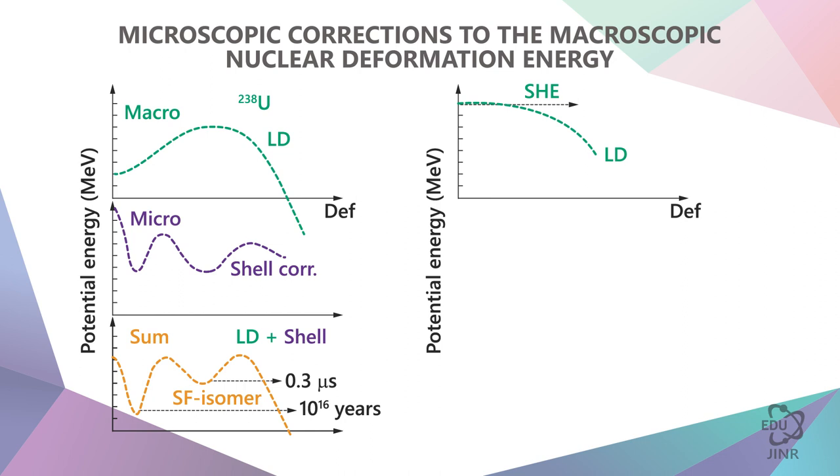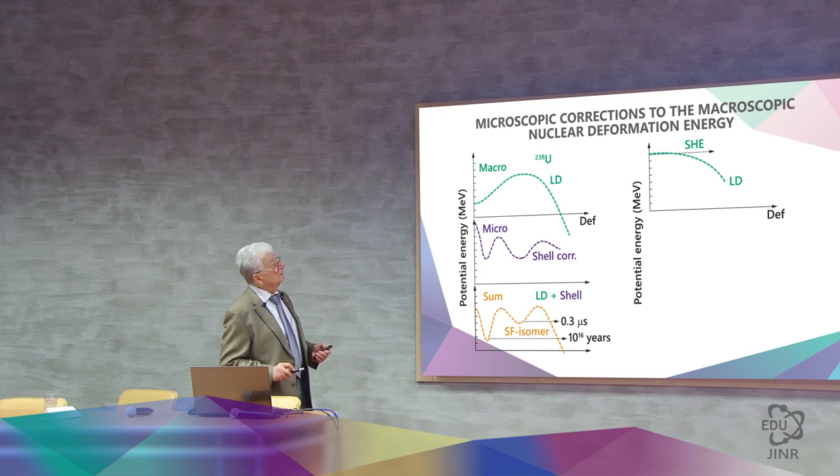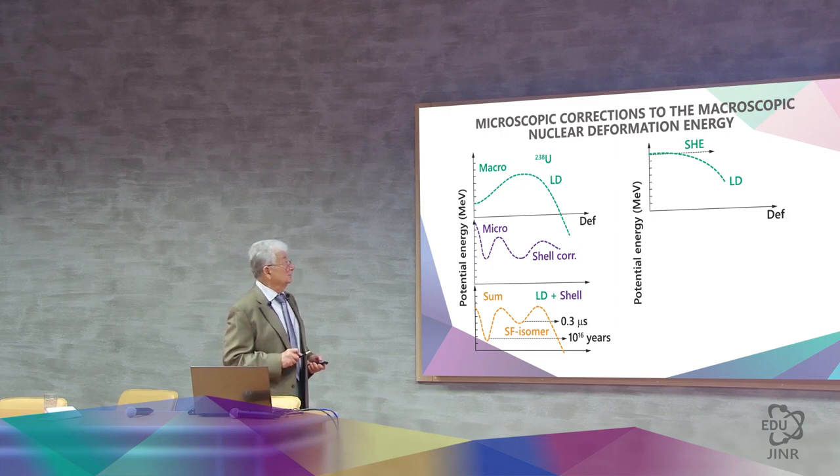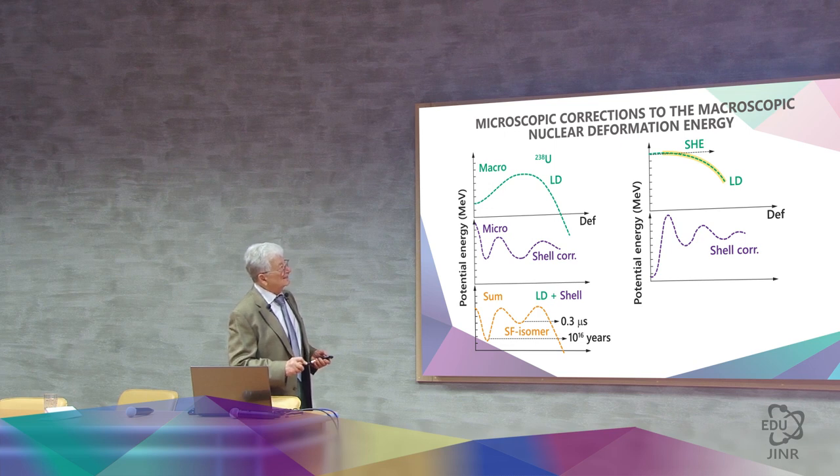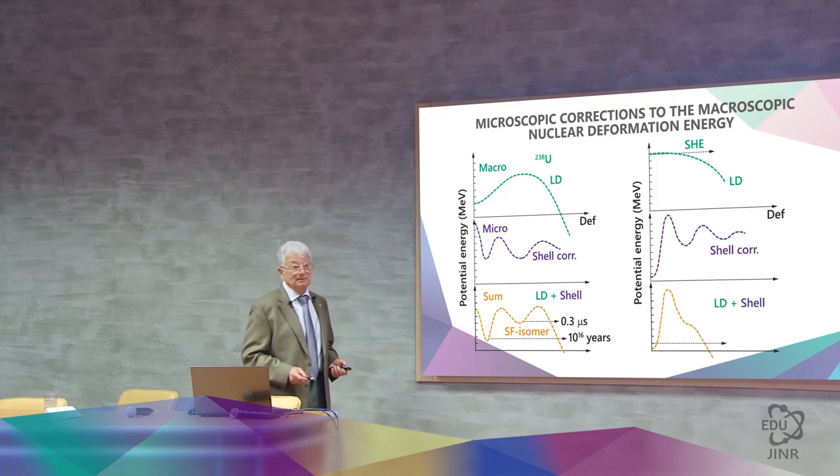And then we use this formula in an unknown zone. We go where there is no liquid drop barrier, where it is zero. But again, we calculate the structural correction, which looks like this. And now we add this barrier, this slope with this, and as a result we get a barrier. A barrier of a completely different nature. A barrier of a structural nature.